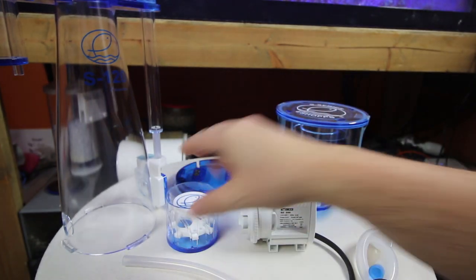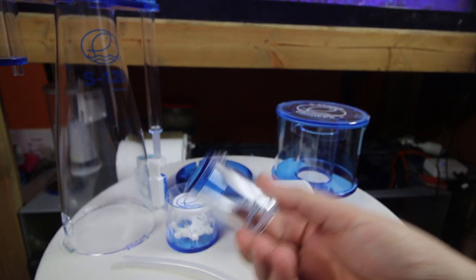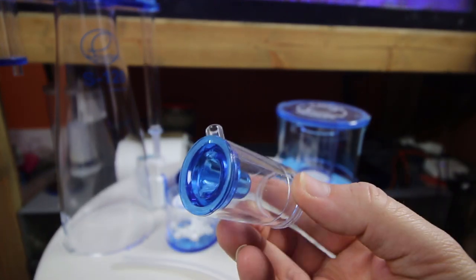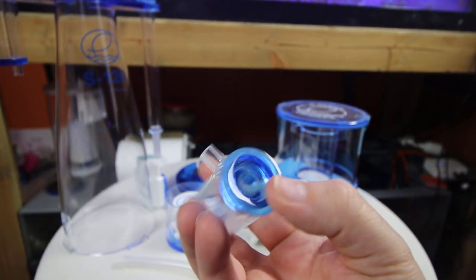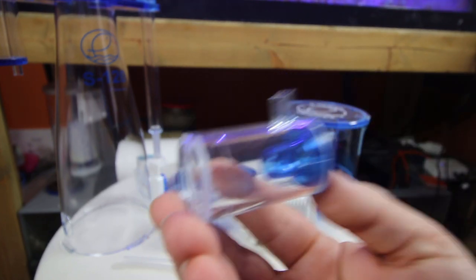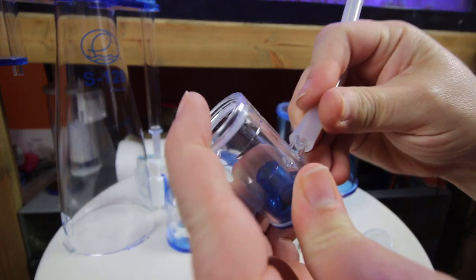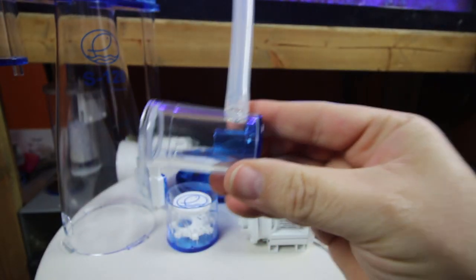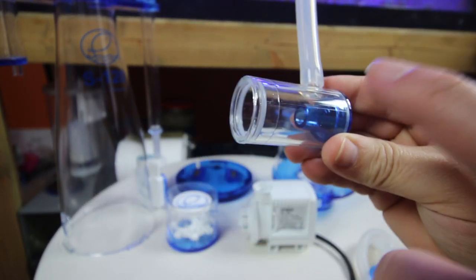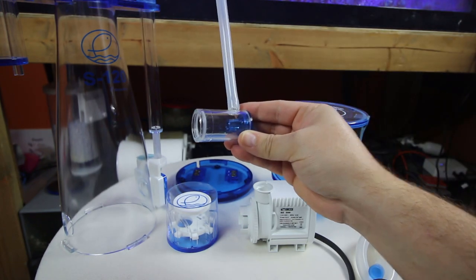And then last but not least, we have the Venturi. And the cool thing about this is absolutely everything on here is clear. Obviously, you have the blue, but it's so transparent. This is going to make it so you can see exactly what is going on with your Venturi. If there is salt creep that is getting stuck in it, if there's algae in there, if there's sand particles, whatever the case may be.